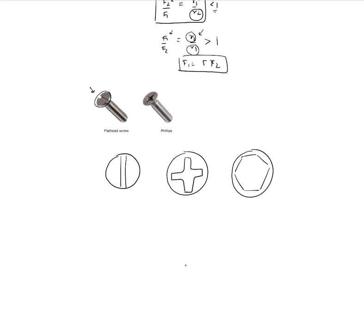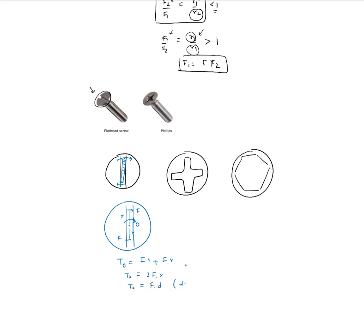For a flat head screw, the screwdriver sits in the slot and when rotated clockwise, applies a force in one direction at each edge of the slot. Drawing the free body diagram: force f acts at each end of the slot, both at distance r from center O. The torque about O is f·r + f·r = 2f·r, or equivalently f·d, where d = 2r.